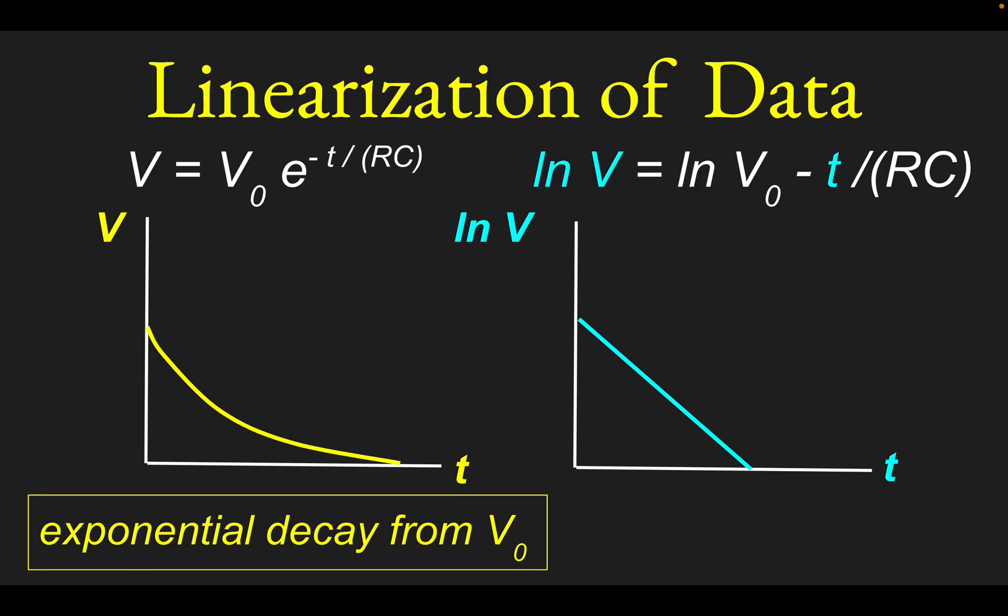what you would get is a line with a negative slope, because the coefficient of the t, which is going to be the slope, minus 1 over rc, it is negative. So your slope is going to be minus 1 over rc, where rc is the so-called time constant. And in this case, we will have a y-intercept. The y-intercept would be this leftover term ln of v naught.